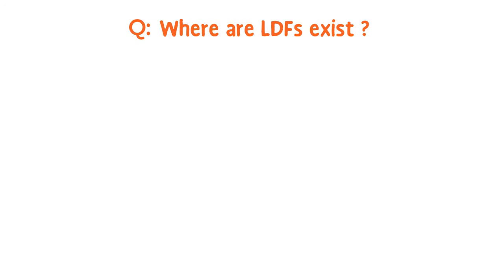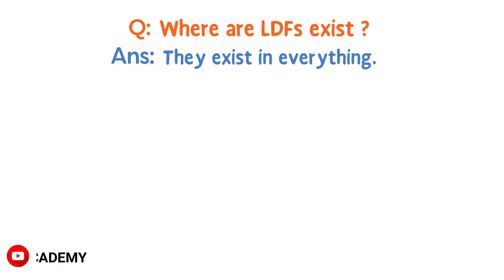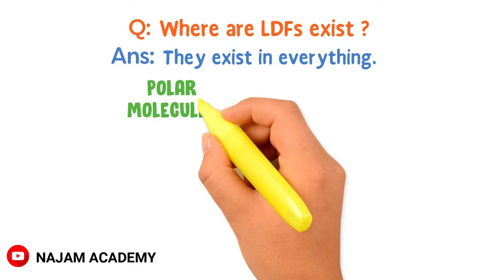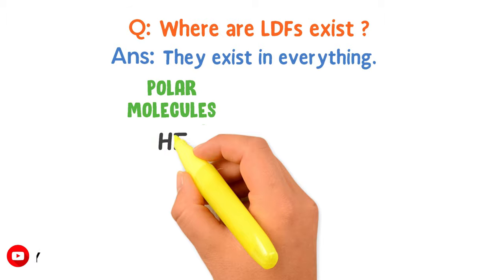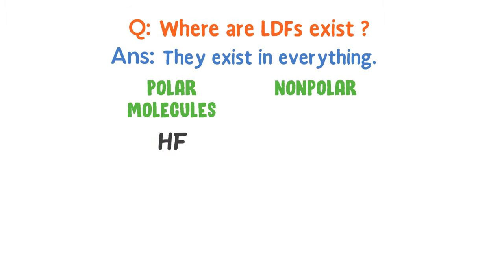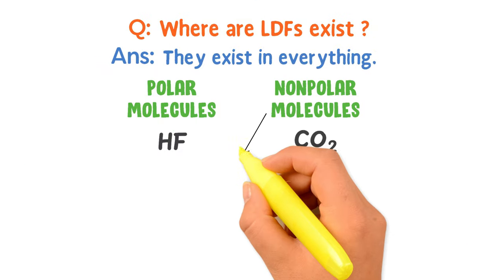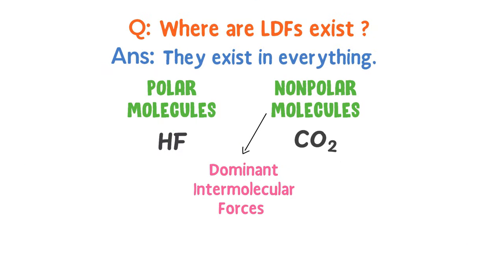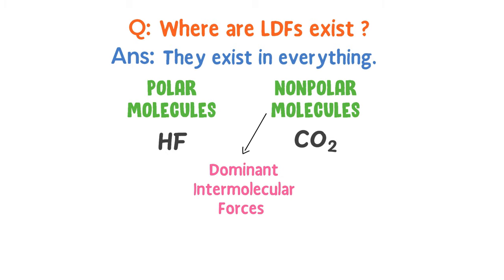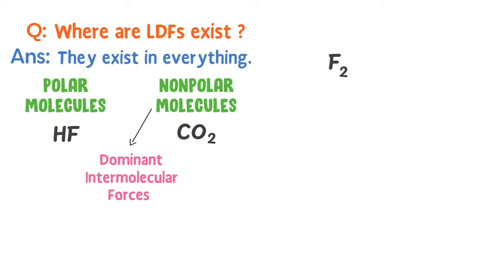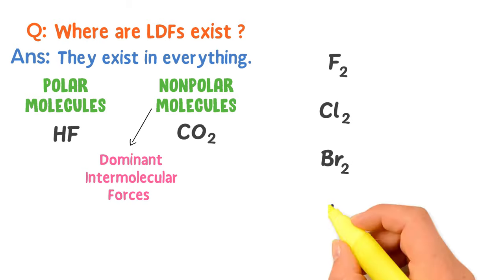You should also learn where London dispersion forces exist. London dispersion forces exist in everything — both in polar molecules like hydrogen fluoride and in non-polar molecules like carbon dioxide. But London dispersion forces are the dominant intermolecular forces in all non-polar molecules. For example, London dispersion forces are dominant forces in the molecules of fluorine gas, chlorine gas, bromine, and iodine.